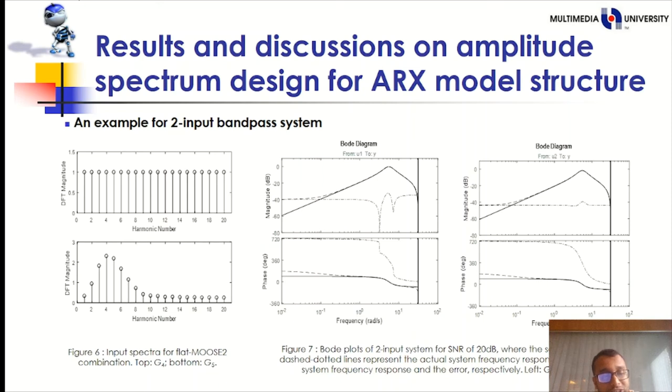The input spectra corresponding to the optimal design combination of flat and MOOSE2 signal are plotted in figure 6. The input signal of system G5 for MOOSE2 spectrum has larger magnitude at harmonic 4. The corresponding Bode plots are shown in figure 7 for SNR 20 dB using a sampling frequency of 10 MHz. The range of frequency is covered by the excited harmonics 0.052 radian per second to 10.47 radian per second. The error is small within this range but large compared to the system gain outside the range.